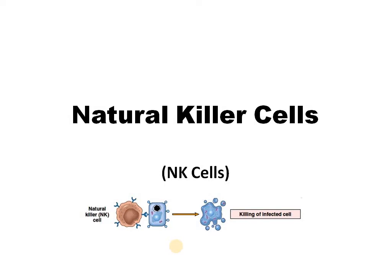NK cells are one of the most important parts of the innate immune system; however, they also help other cells like macrophages and dendritic cells with their activation and enhancement of activities. It is called a natural killer cell because it has the ability to kill tumor cells without any priming or prior activation. It can also destroy virus-affected cells automatically without any presence of other cell surface antigens.